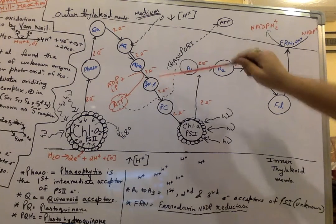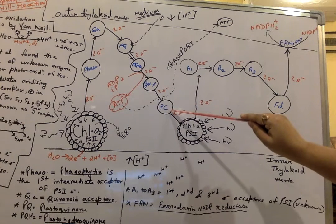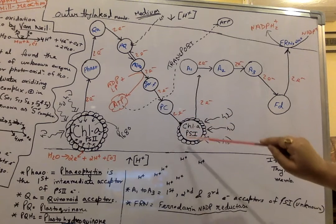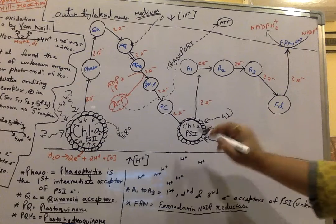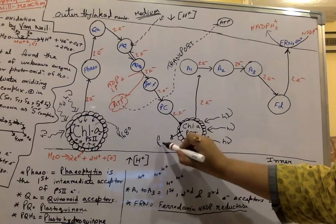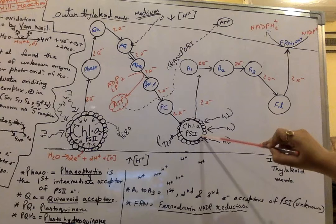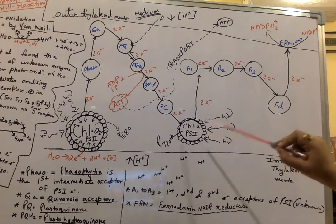From cytochrome F, electrons will flow to PC, which is plastocyanin. From plastocyanin, the electrons will move into PS1, the reaction center of PS1, which is P720.